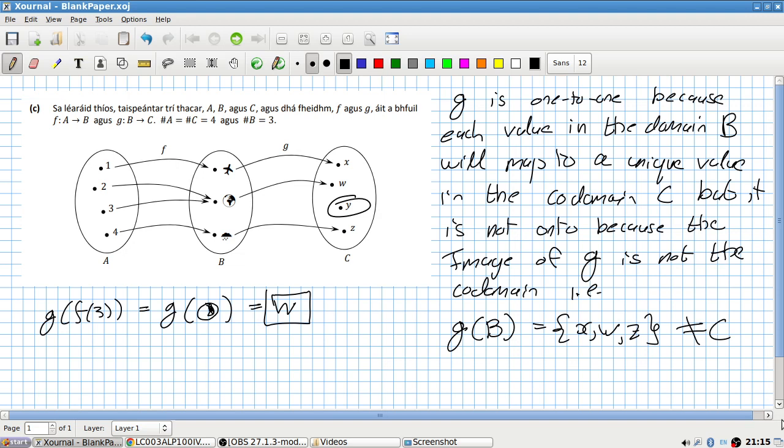g is one-to-one because each value in the domain B will map to unique value in the codomain C. But it is not onto because the image of g is not equal to the codomain.